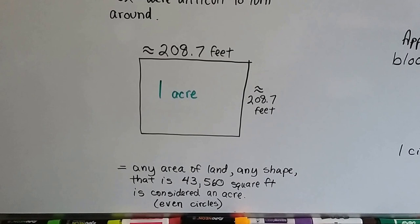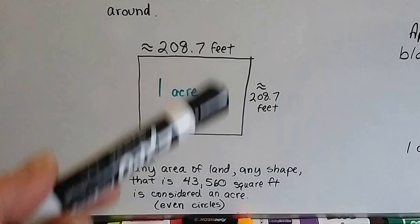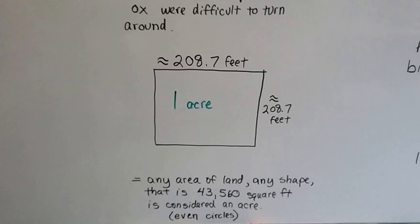It's any area of land, any shape, that is 43,560 square feet. And it would be considered an acre. Even if it was in a circle, if it was 43,560 square feet, it would be an acre.